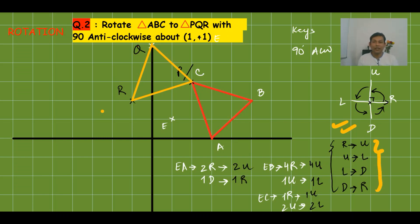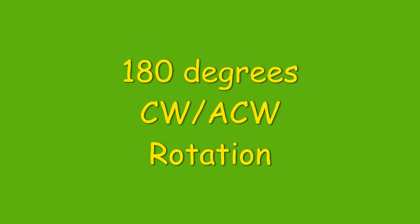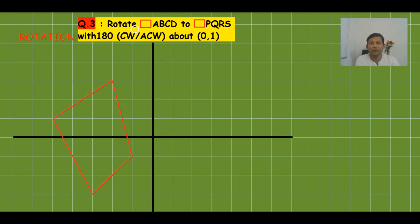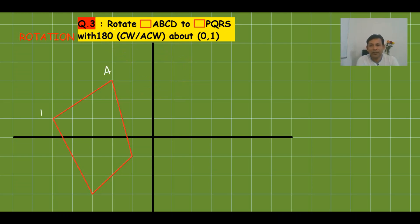Question 3: rotate shape ABCD to PQRS with 180° rotation — clockwise or anticlockwise — about (0, 1). For 180° rotation, clockwise and anticlockwise give the same result, so direction does not matter. The center E is at (0, 1), which we mark on the grid.